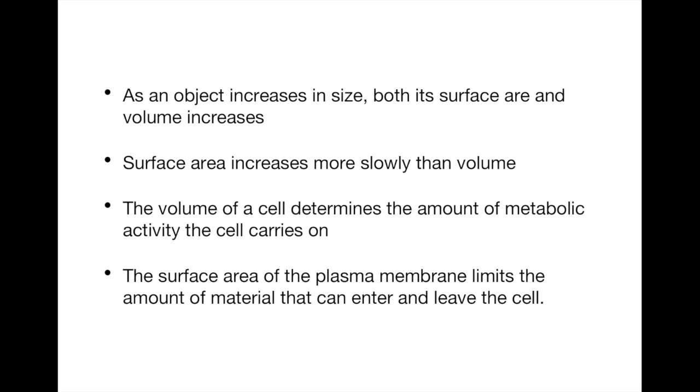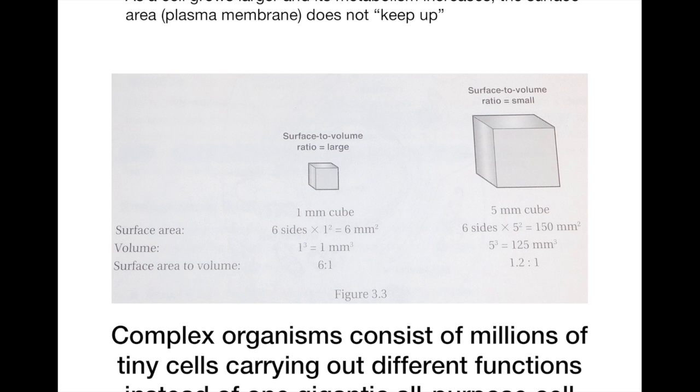The volume of the cell determines the amount of metabolic activity the cell carries on. However, the surface area of the plasma membrane limits the amount of material that can enter and leave the cell. So as a cell grows larger and its metabolism increases, the surface area, the plasma membrane, does not keep up. This is why complex organisms consist of millions of tiny cells carrying out different functions instead of one gigantic all-purpose cell.